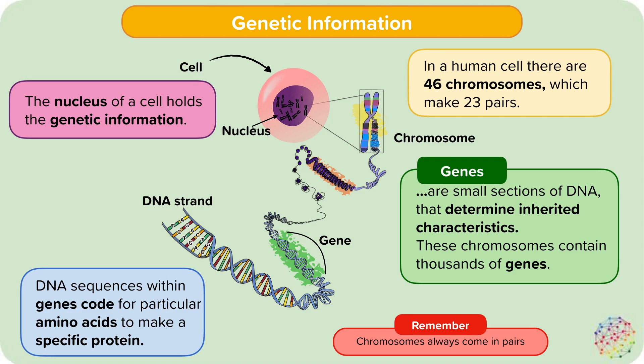Did you know that different organisms have different numbers of chromosomes in their body? For example, potatoes have 48 chromosomes and chickens have 78.